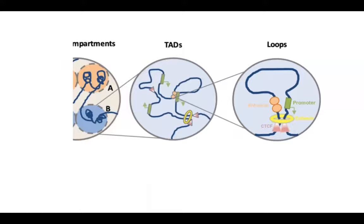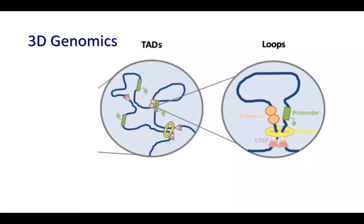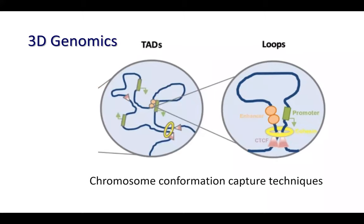People are now recognizing the importance of 3D genomics, and new technologies have been developed to study it. For example, the chromosome conformation capture technique looks at regions that closely interact with each other, allowing us to examine TAD structure through cross-interaction. The method uses formaldehyde to cross-link the chromosome, isolates this cross-linked region, connects the ends, and generates a library. This library can then be deciphered by next-generation sequencing.